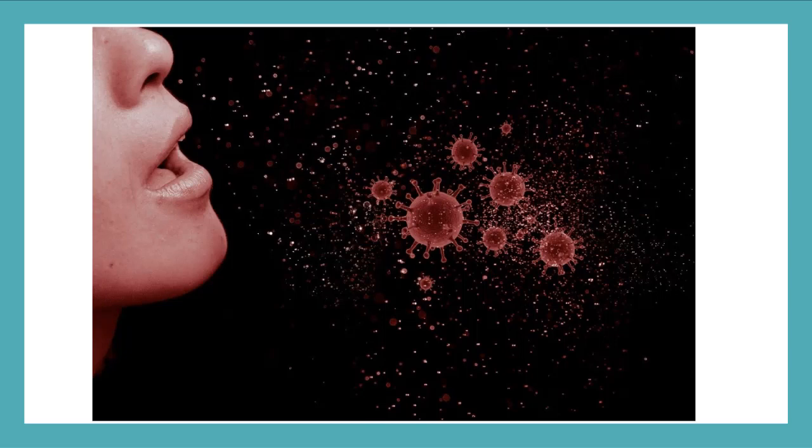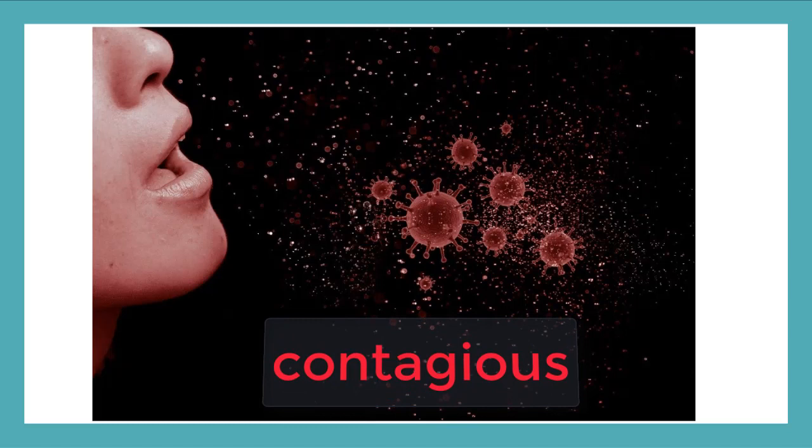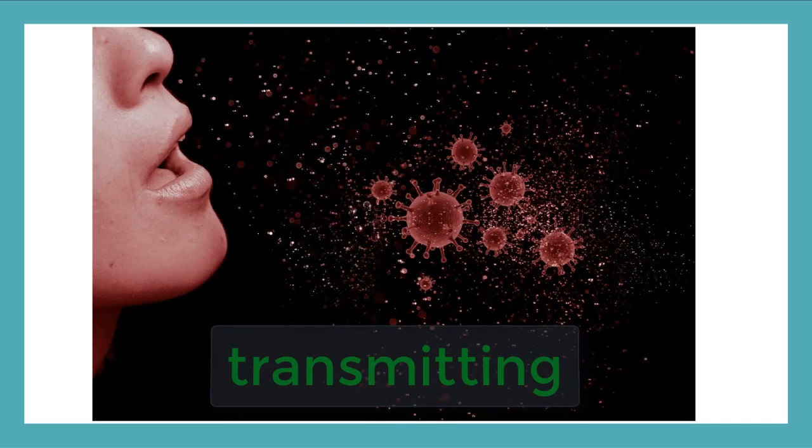When an infectious disease is easily and quickly spread and makes a lot of people sick, it is contagious. That means the pathogens are spreading, or as we call it in science, transmitting. So how do pathogens transmit?